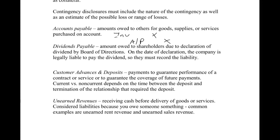Dividends payable is another one. Dividends are the amount owed to shareholders due to the declaration — and that's the key word — it becomes a liability when declared by the board of directors. On the date of declaration, the company is legally liable to pay the dividends, so they must record the liability. Typically you'll have either dividends declared or retained earnings debited, and dividends payable credited. Some books will automatically debit retained earnings, while others use the dividend account and then close that out to retained earnings during closing entries.